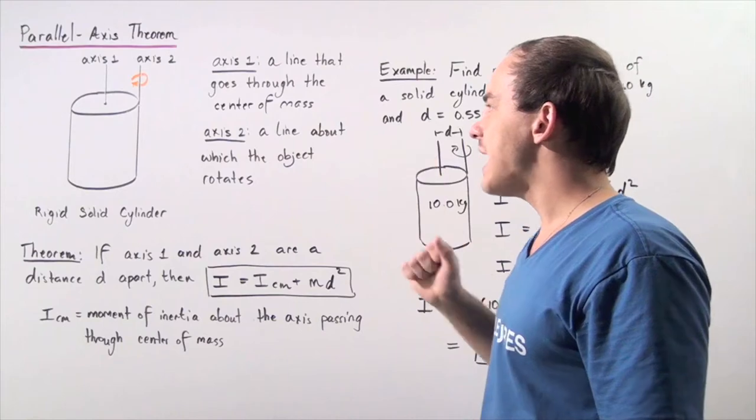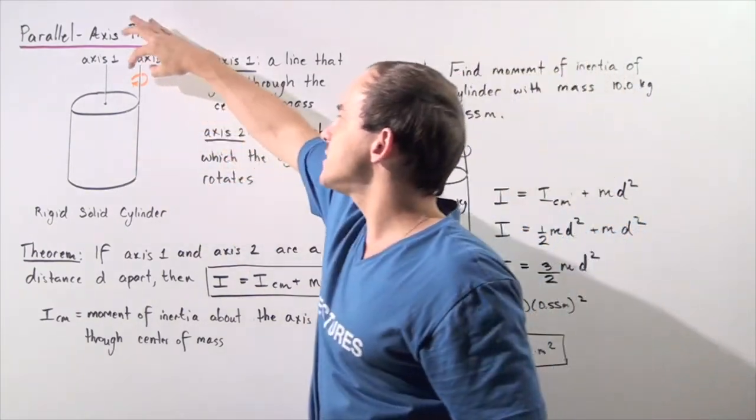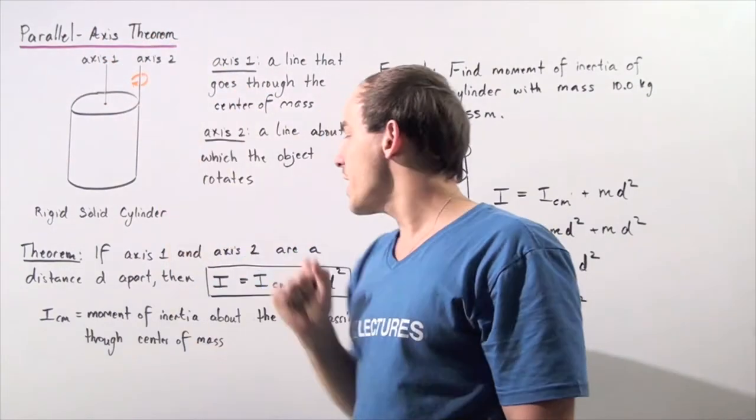Where m is simply our mass of the object, and d squared is simply our distance between axis one and axis two, squared.